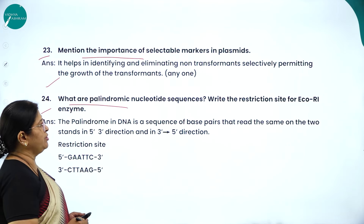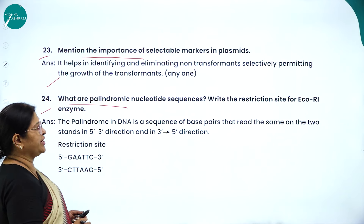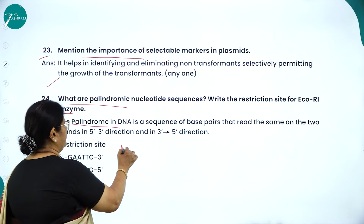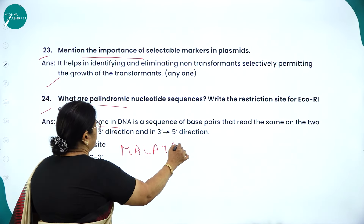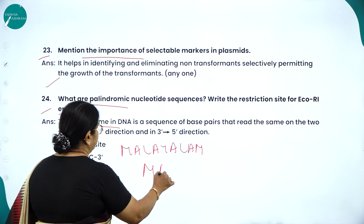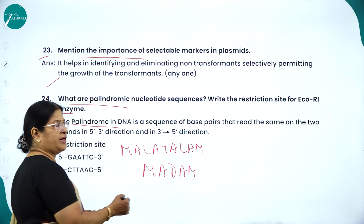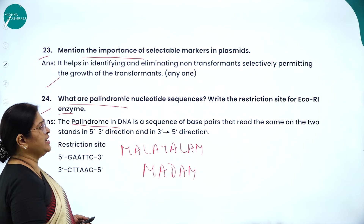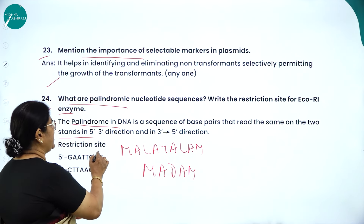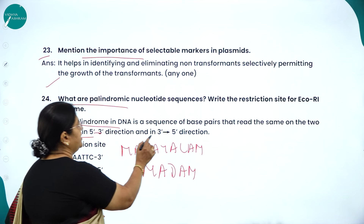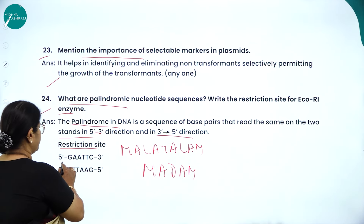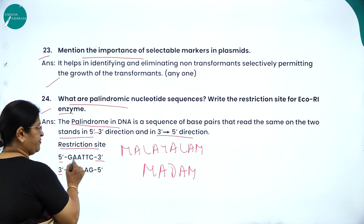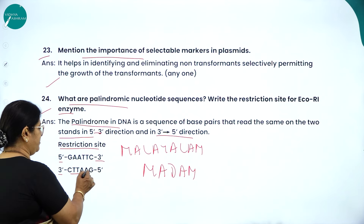Palindromic nucleotide sequences: a palindrome, like the word 'Madam', reads the same forward and backward. In DNA, a palindromic sequence reads the same on two strands in the 5'→3' direction and in the 3'→5' direction. The restriction site for EcoRI is 5'-GAATTC-3' on one strand and 3'-CTTAAG-5' on the other — reading forward and backward gives the same sequence.